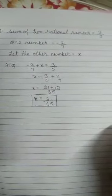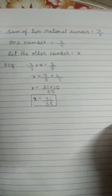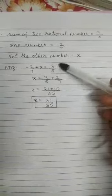Now next is sum of two rational number is 3 upon 5. One number is minus 2 upon 7. So let the other number is X. Now in two numbers, the answer is 3 upon 5.